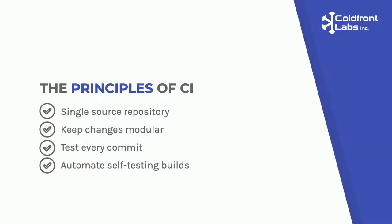Depending on who you ask, there are anywhere between 3 and 30 principles of CI. Today we're going to keep things simple and highlight just a few that everyone pretty much agrees on. The main tenet is that code is stored, maintained, adapted, and updated in a single central repository — by a version control system such as Git, not on your production web server. Changes to the code should be small and modular, merged in on a regular basis, and every commit should be tested with automated self-testing builds.